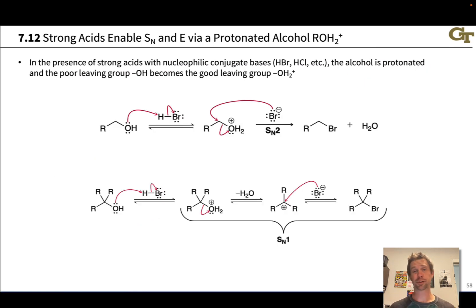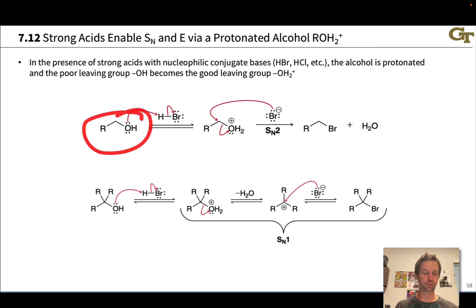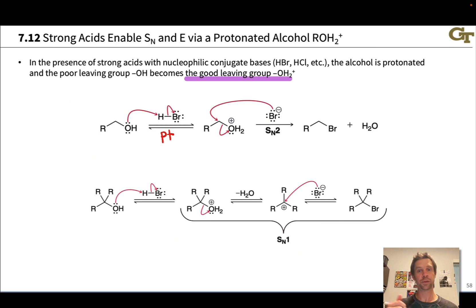There's another way to convert OH into a good leaving group that doesn't involve conversion to a sulfonate: using a strong acid to protonate the alcohol oxygen and produce a species that can lose water as a leaving group. Water is a good leaving group since it is the conjugate base of hydronium, which is right on the edge of strong acid. For example, when you take an alcohol and treat it with a hydrohalic acid like HBr, protonation of the alcohol oxygen generates the good leaving group OH₂⁺, and this primary electrophile is susceptible to SN2 reaction with bromide.